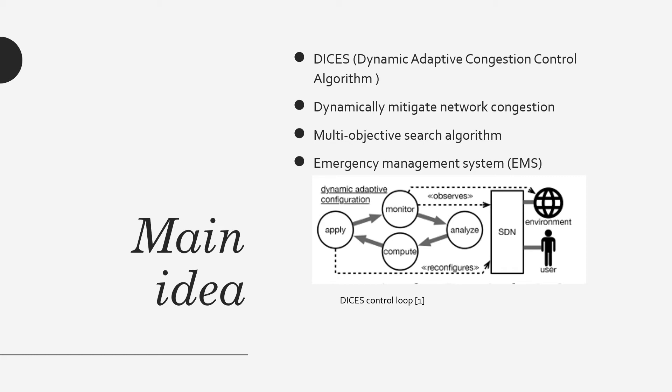DICE's is a dynamic adaptive congestion control algorithm for a software-defined network that aims to reduce congestion on an IoT system, and the control loop is shown in the image on the slide. DICE's aims to maintain a high level of quality of service. The monitor step collects network information from the SDN, the analyze step analyzes the network to decide if it is congested or not, the compute step reconfigures if congestion is detected, and apply will apply the new configuration to the SDN.